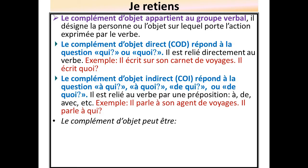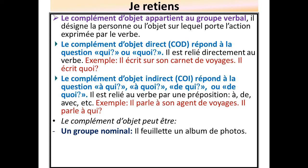Le complément d'objet peut être, premièrement, un groupe nominal. Exemple : il feuillette un album de photos. Il feuillette quoi ? Il feuillette un album de photos. « Un album de photos », c'est un groupe nominal. Le complément d'objet peut être encore un nom propre. Exemple : j'ai appelé Saïd. J'ai appelé qui ? J'ai appelé Saïd. « Saïd », c'est un nom propre.